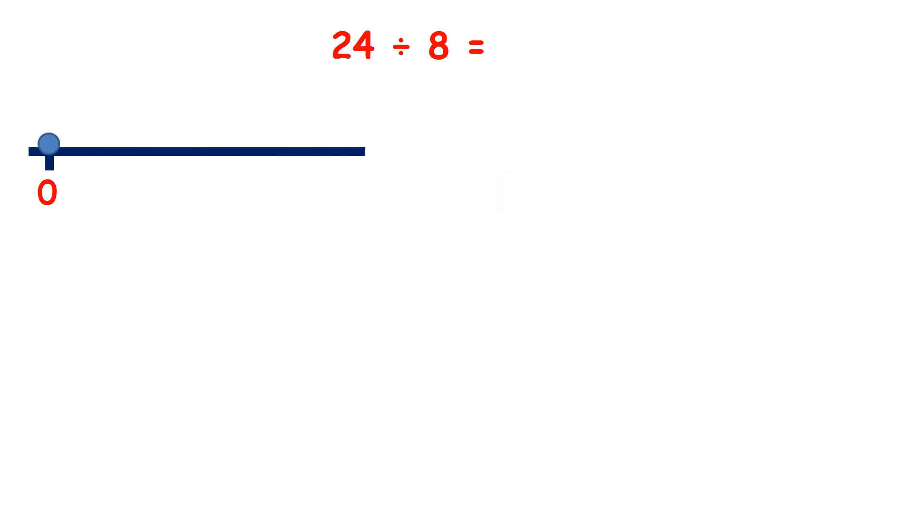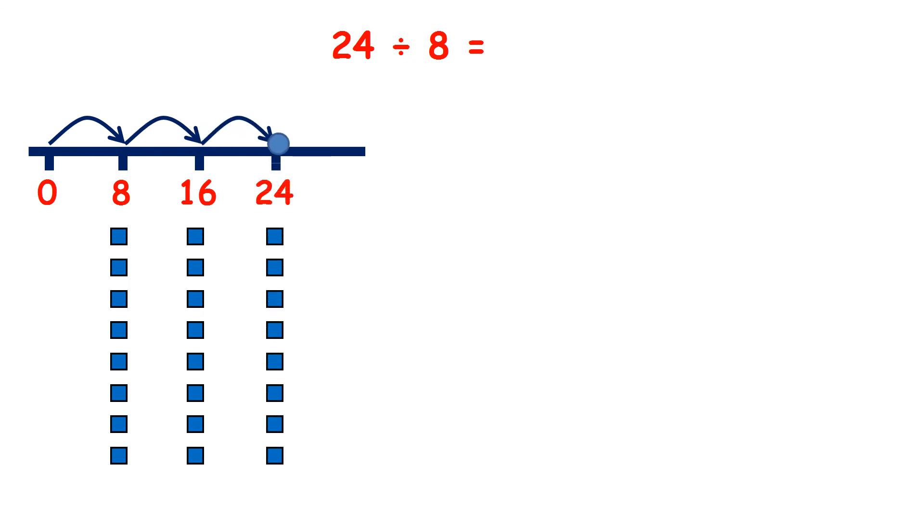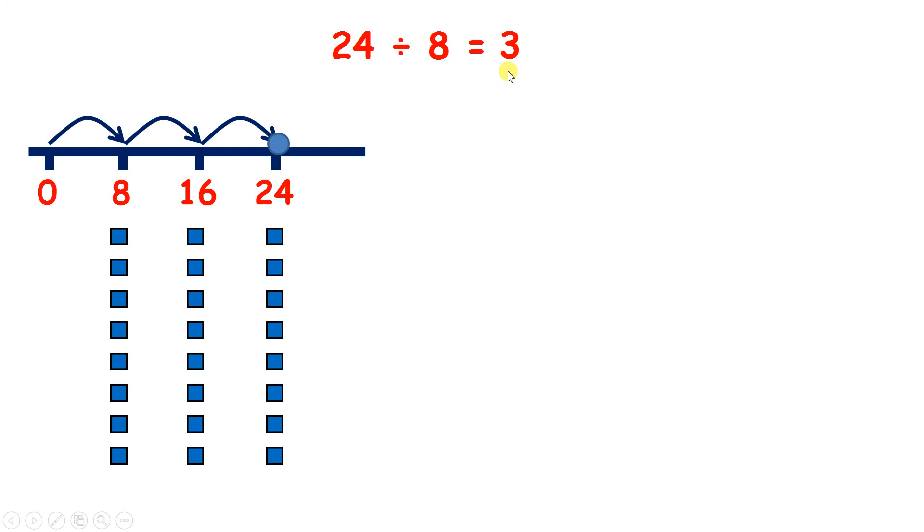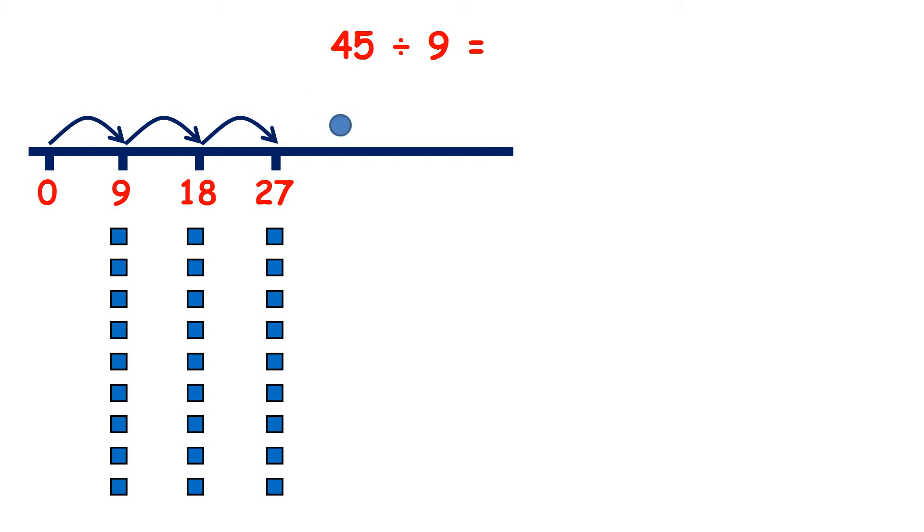Now we have 24 divided by 8. So we have 8, 16, 24, that's 3 jumps, so 3 is our answer. And now 45 divided by 9, so counting up in 9s, we have 9, 18, 27, 36, 45. So we have 5 groups of 9, so 45 divided by 9 is 5.